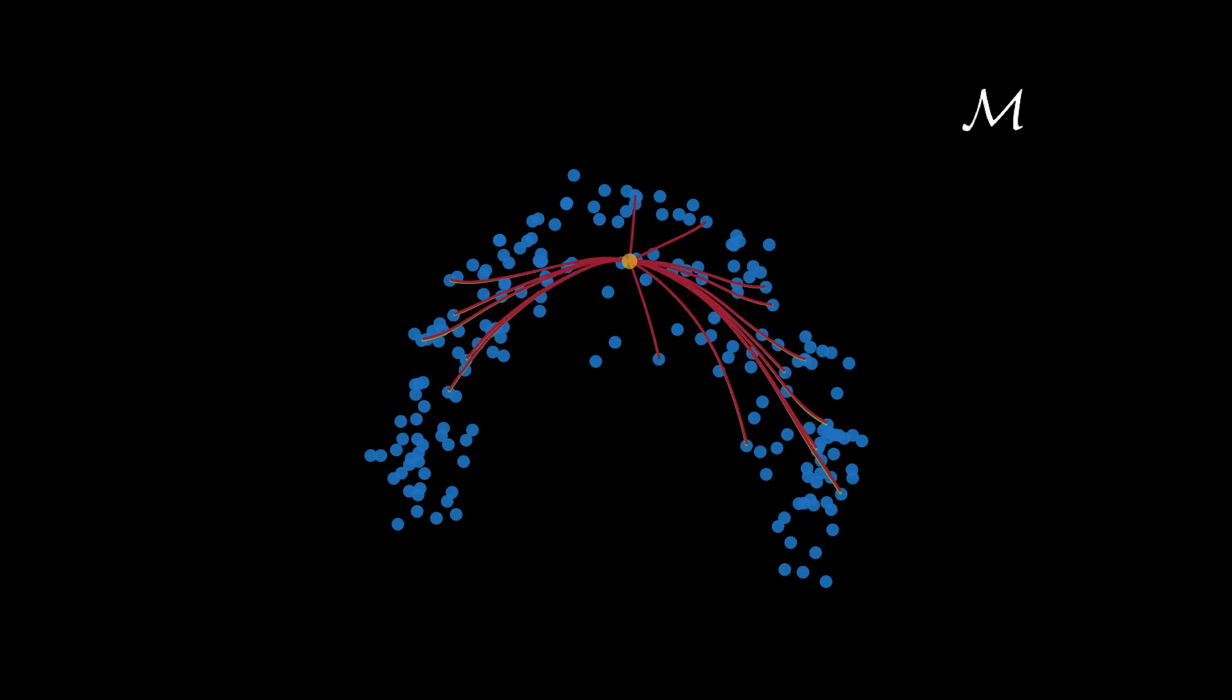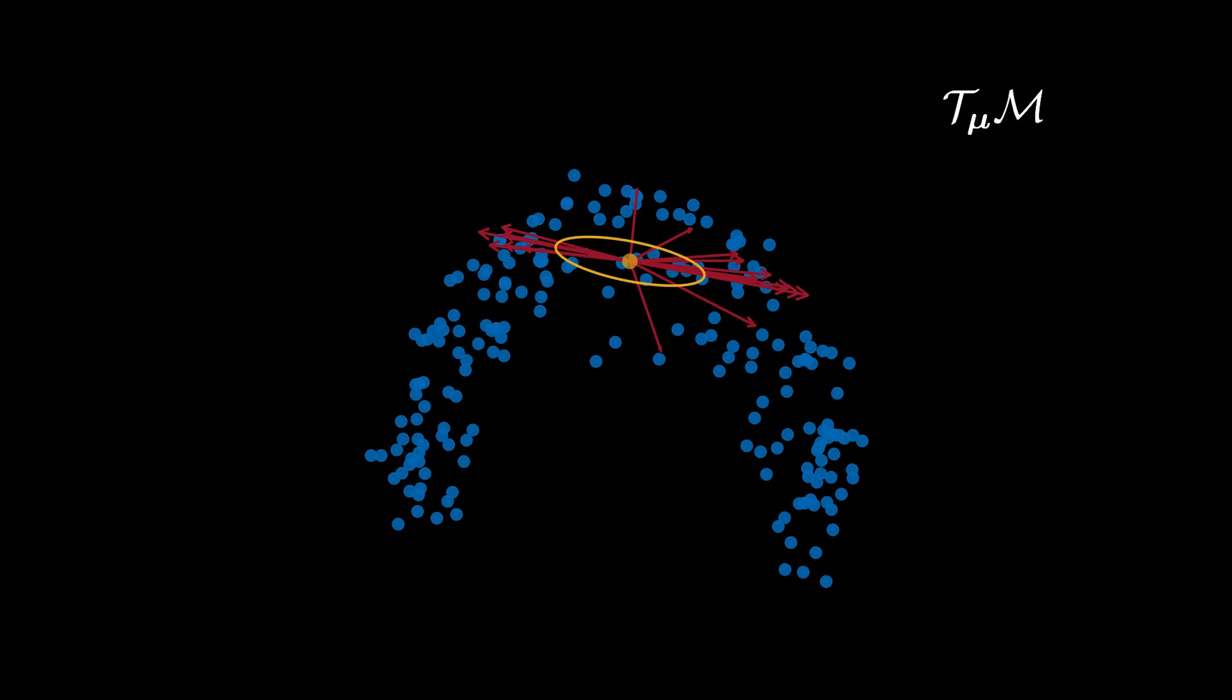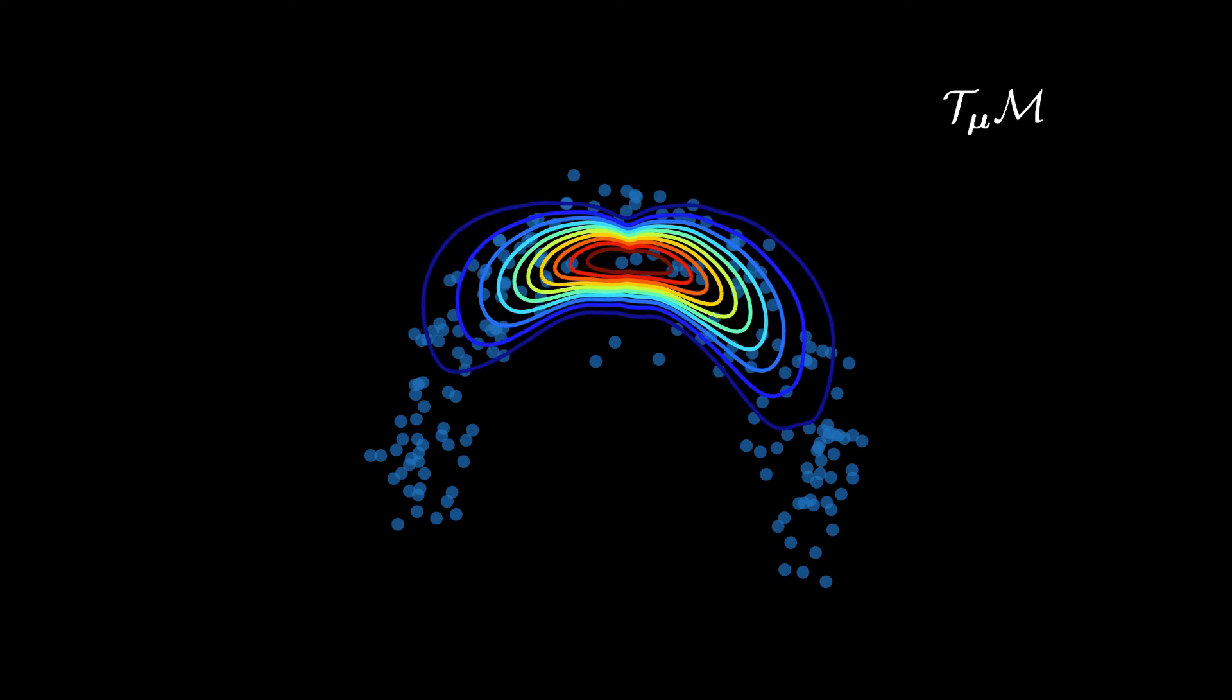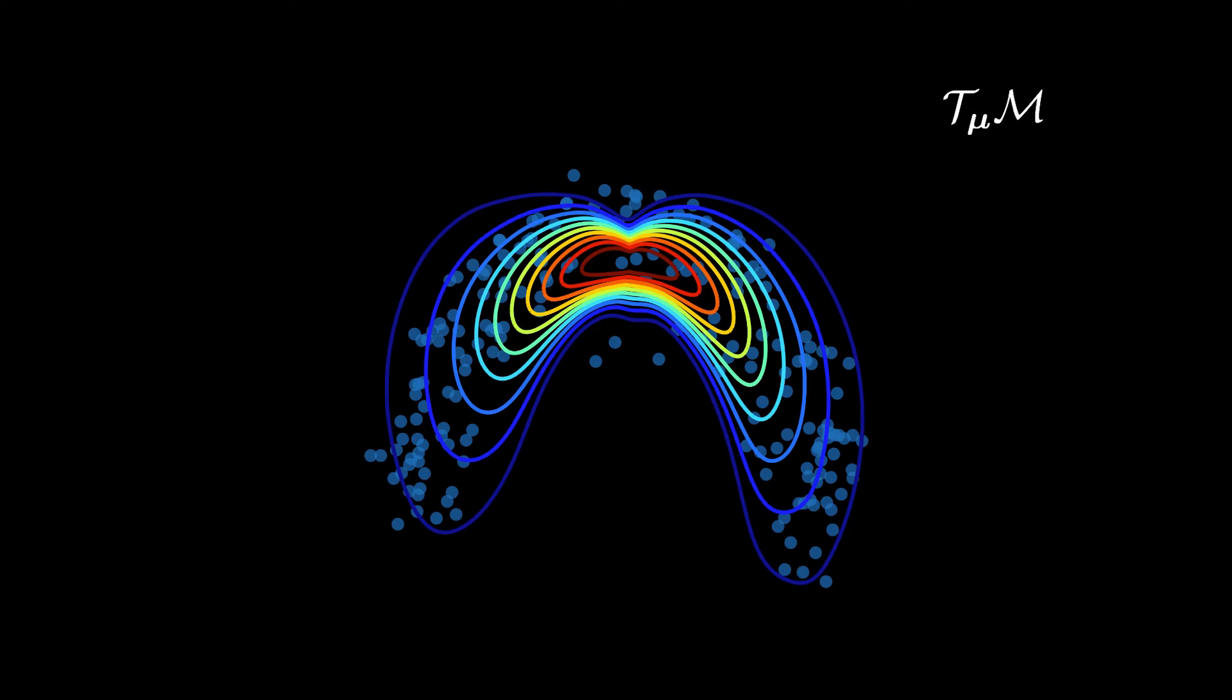Considering this point, which is likely to be the correct intrinsic mean of the data, we compute all the logmaps. Since the tangent space is Euclidean, we can define a covariance matrix and thus we naturally compute the unnormalized density of the normal distribution of the tangent space.